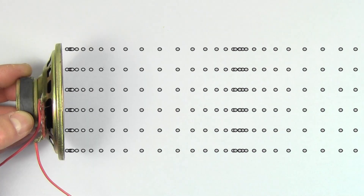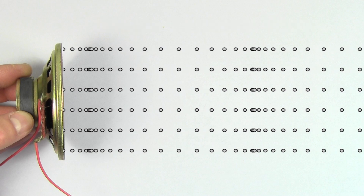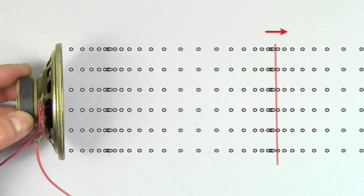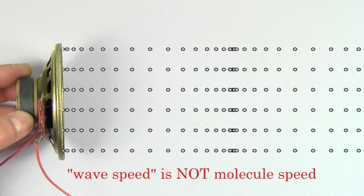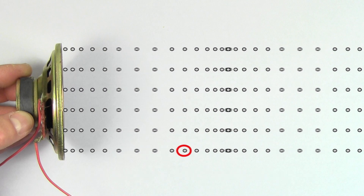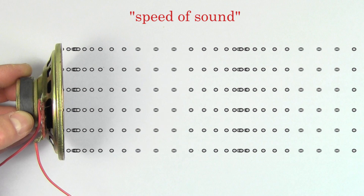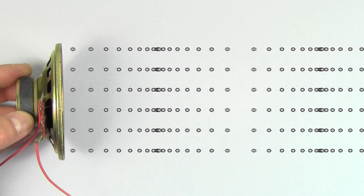We can also watch the speed of sound of a repeating simple harmonic wave. The speed of the wave can again be determined by the speed of the compressed regions as they travel through the medium. Note that the speed of sound does not mean the speed of the air molecules as they move back and forth. The air molecules are moving with some speed, but by the speed of sound, we mean the speed of the disturbance as it moves through the air molecules.